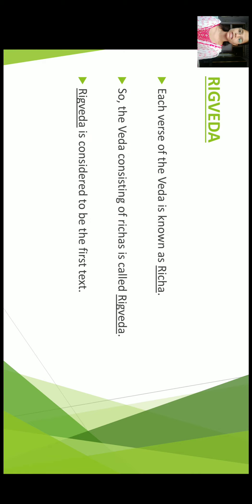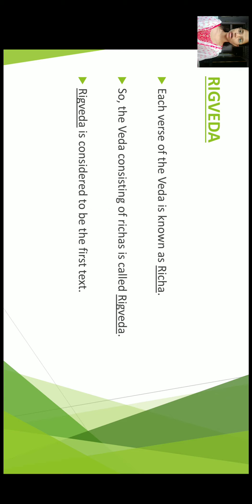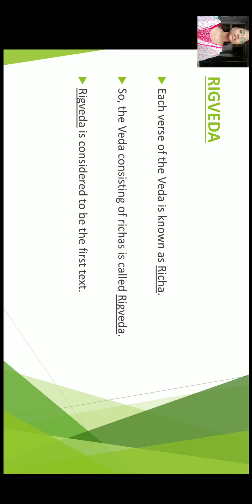The first one is the Rig Veda. Rig Veda is an ancient Indian religious book. It is also one of the oldest writings in Sanskrit language. Each verse of the Veda is known as Richa. So the Veda consisting of Richas is called Rig Veda. Richa means a verse composed to praise a deity. When a number of Richas are put together to praise a particular deity, the poetic composition is called Sukta. The Rig Veda consists of many Suktas composed to praise different deities.